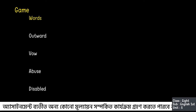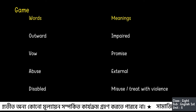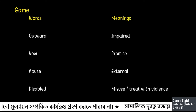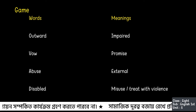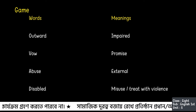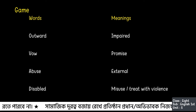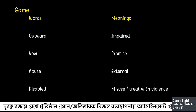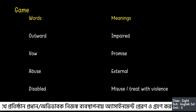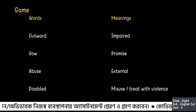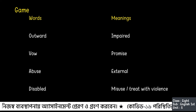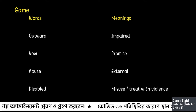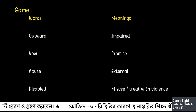Now let's go for a quick game. On the screen, you can see two columns. One is titled as words, another one as meanings. You need to match words with the respective meanings. The words have been picked from the text you just read. Try your best to infer the meaning from the context of the text.